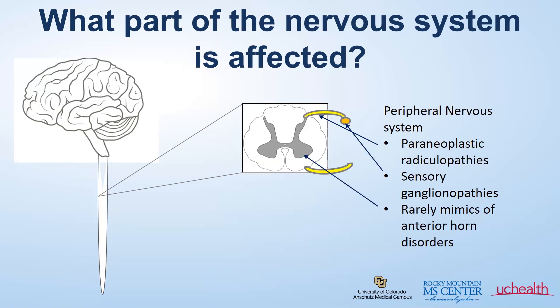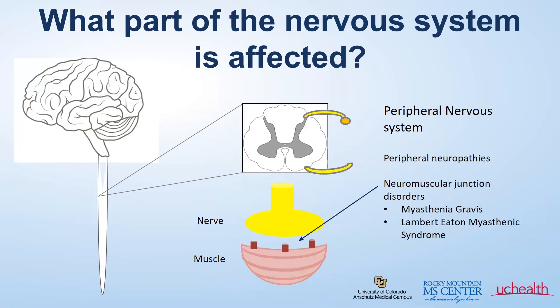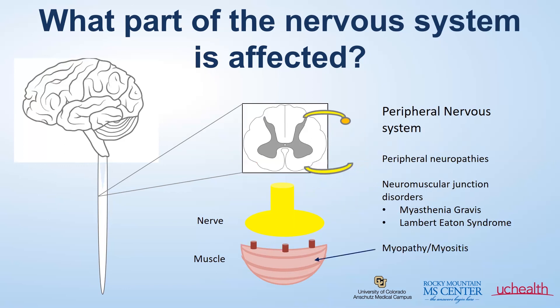Very rarely there can be mimics of anterior horn disorders, such as ALS — again, very rare. Moving out to the nerve itself, you can have peripheral neuropathies. There is a communication between the nerve and the muscle called the neuromuscular junction. When that is involved, you can get syndromes such as myasthenia gravis or Lambert-Eaton myasthenic syndrome. When inflammation affects the muscle itself, that is called myositis.